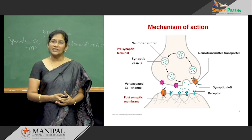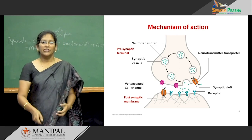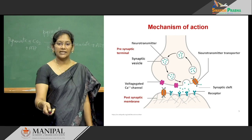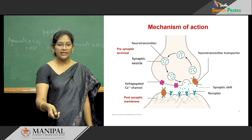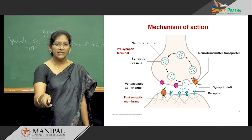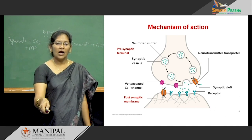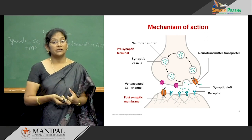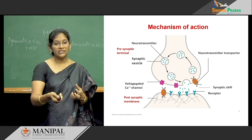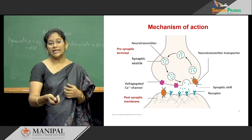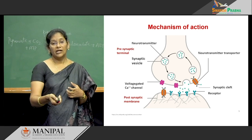In the mechanism of action, there is mainly the presynaptic terminal and the postsynaptic terminal. In the presynaptic terminal, the neurotransmitters are mainly synthesized and stored. The neurotransmitters are mainly synthesized and stored in the synaptic vesicle.